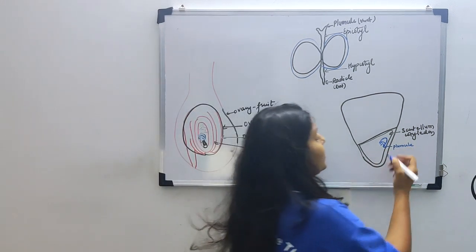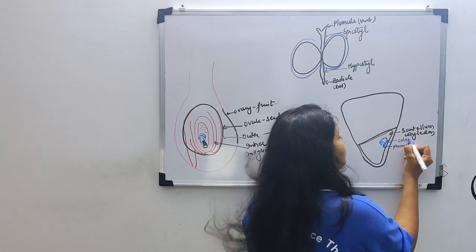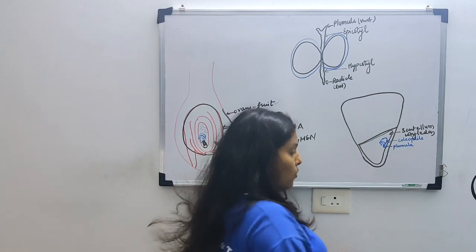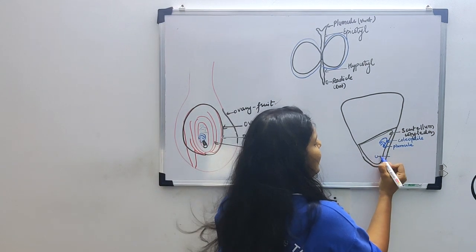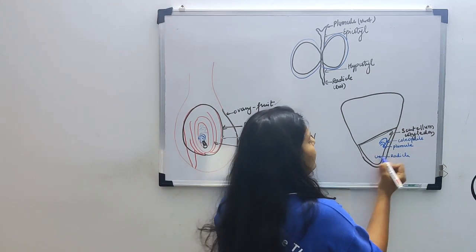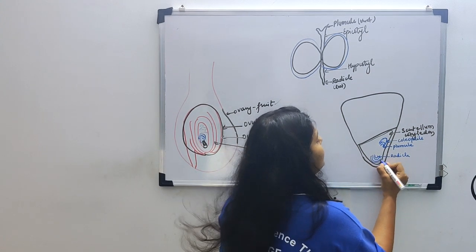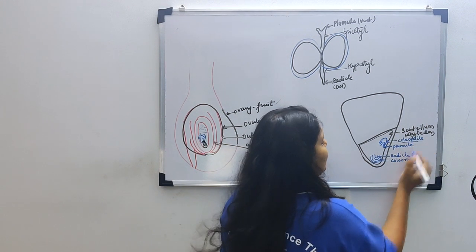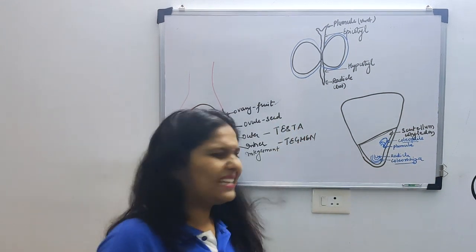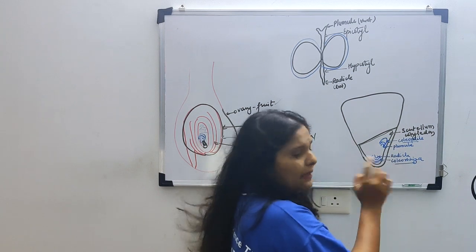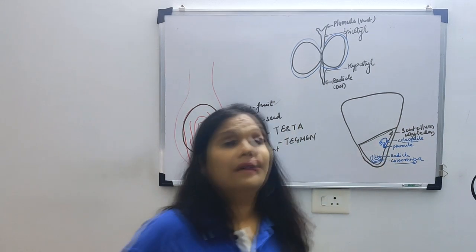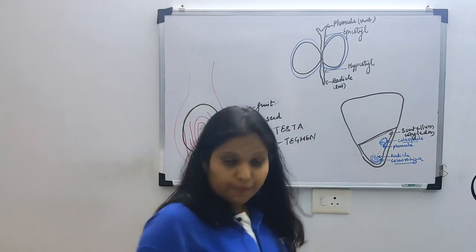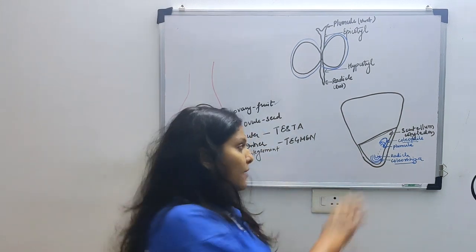Now, cotyledon, radicle, and embryonal axis - this is our embryonal axis. Here you will see on this side you will get plumule. The sheath that covers the plumule we call coleoptile. On the other end, this is our radicle, and we will cover the radicle with a sheath we call coleorhiza. So basically, coleoptile and coleorhiza are the sheaths of plumule and radicle. It has testa and tegmen, and we can see endosperm here.